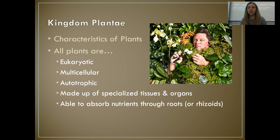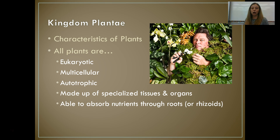First and foremost, they belong to the domain Eukarya, which means that all plants are eukaryotic — their cells have a nucleus and they have those specialized membrane-bound organelles. All plants are multicellular, meaning they're made up of many cells. All plants are autotrophic, meaning they make their own food through the process of photosynthesis. And all plants are made up of specialized tissues and organs.